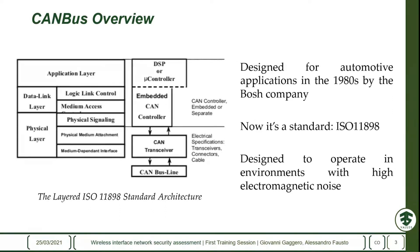This type of automated system is usually based on the CAN protocol. CAN is a protocol designed for automotive applications in the 1990s by the Bosch company and is now a standard that defines the data link and physical layer. It was designed to operate in environments with high electromagnetic noise.